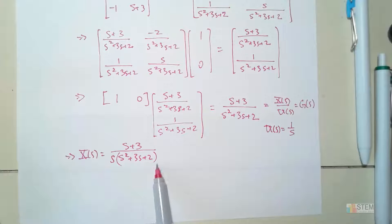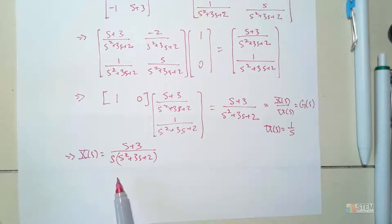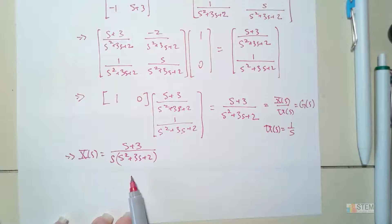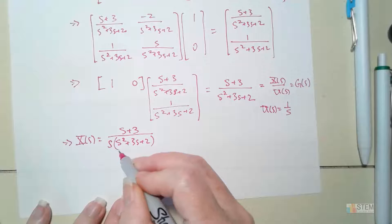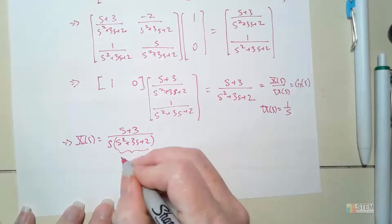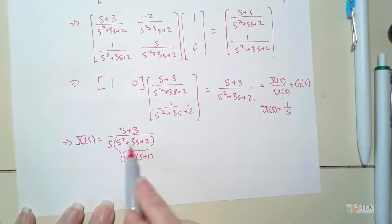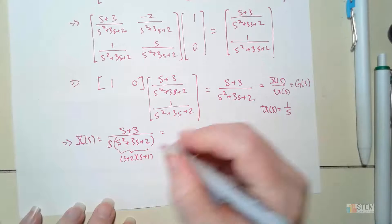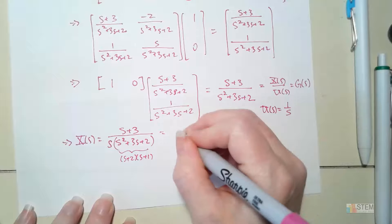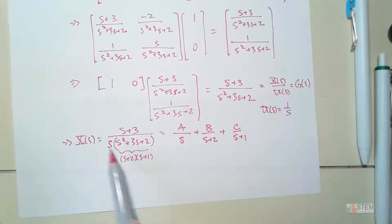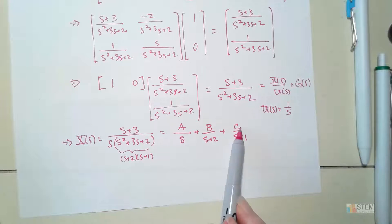Now I need to get X of T using the inverse Laplace, but let's simplify first using partial fractions. The polynomial S²+3S+2 factors as (S+2)(S+1). So I can set this fraction equal to A/S plus B/(S+2) plus C/(S+1), where A, B, and C are values we need to solve for.